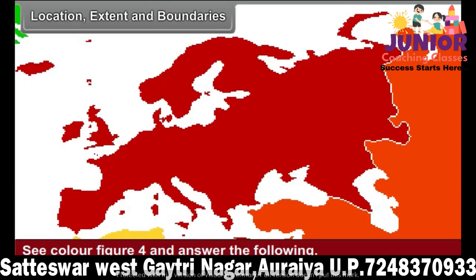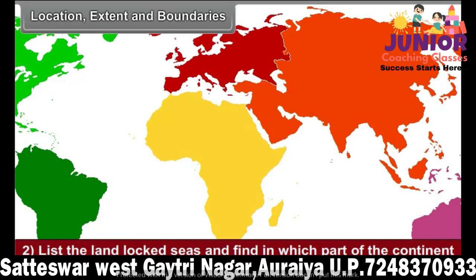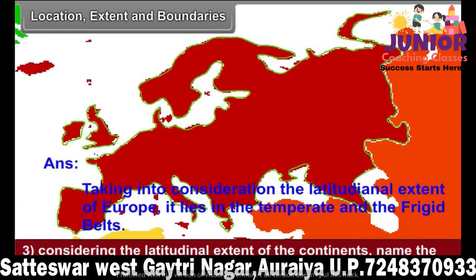Question 1: List the continents and oceans surrounding this continent. Question 2: List the landlocked seas and find in which part of the continent they are located. Question 3: Considering the latitudinal extent of the continent, name the climatic belts in which this continent spreads.